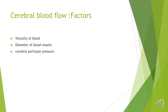Now let us see some of the factors determining cerebral blood flow. There are three factors: viscosity of blood, diameter of blood vessels and cerebral perfusion pressure.